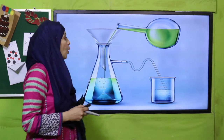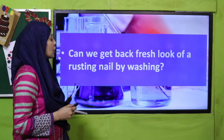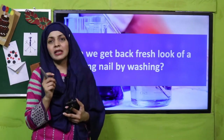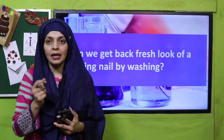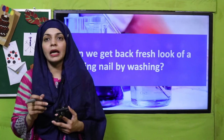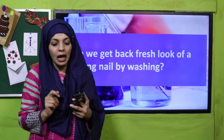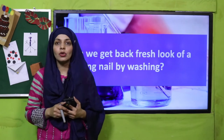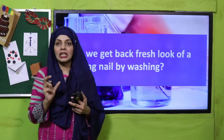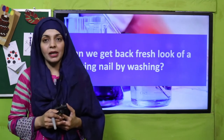Now is the time for the pre-reading question: can we get back the fresh look of a rusting nail by washing? My dear students, you often see iron objects getting rust — they turn an orange color. Many nails get rusty. If you wash them with soap or water, can you remove the rust and get a brand new nail? No, because rusting is also a chemical change and it is irreversible.